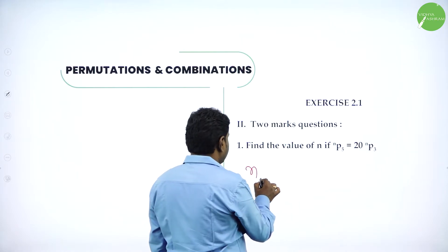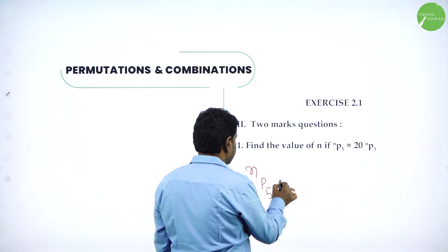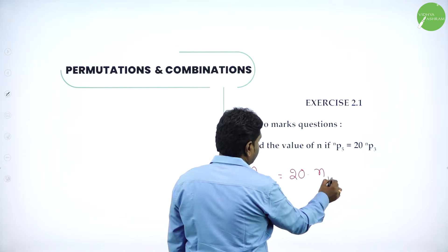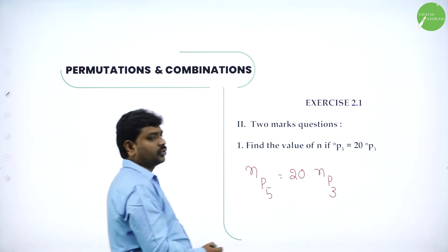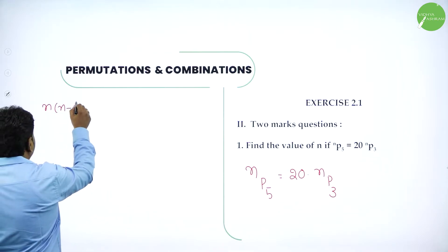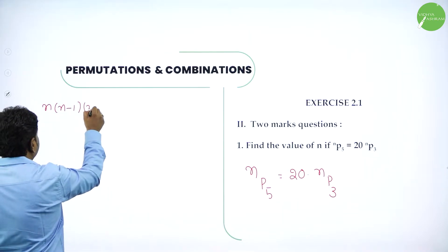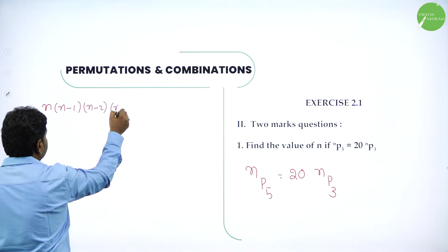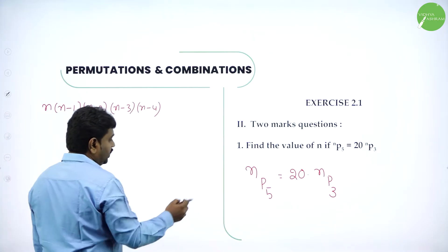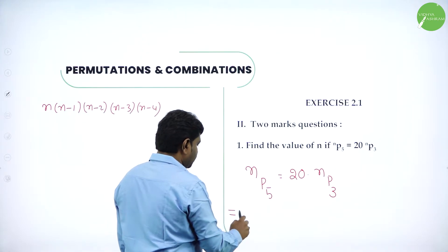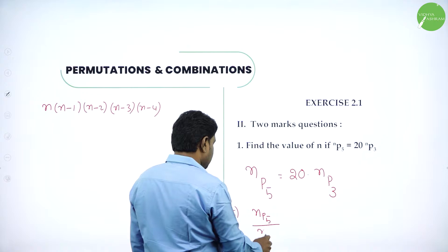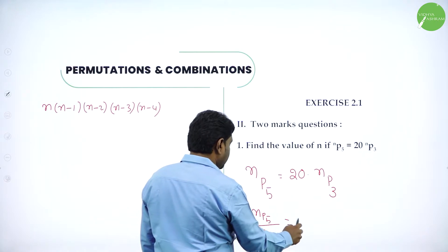They gave NP5 value is the same as 20 times NP3. Now, NP5 means N into N minus 1 into N minus 2 into N minus 3 into N minus 4 — that's five terms. Or, can I rewrite this as NP5 divided by NP3 equals 20?